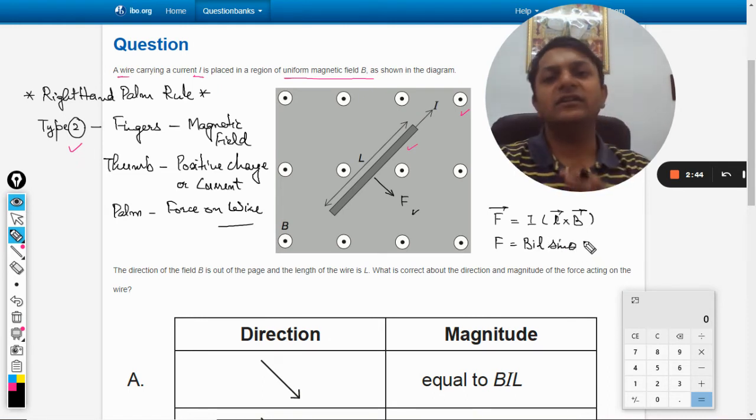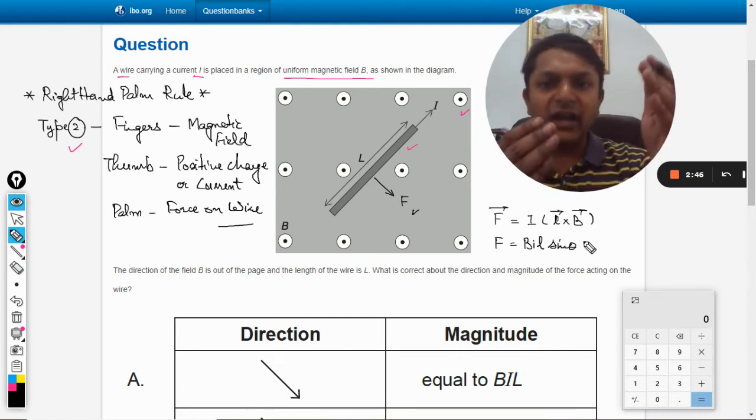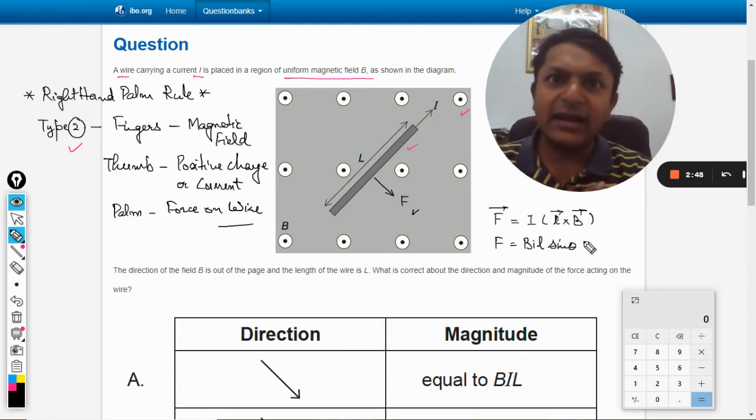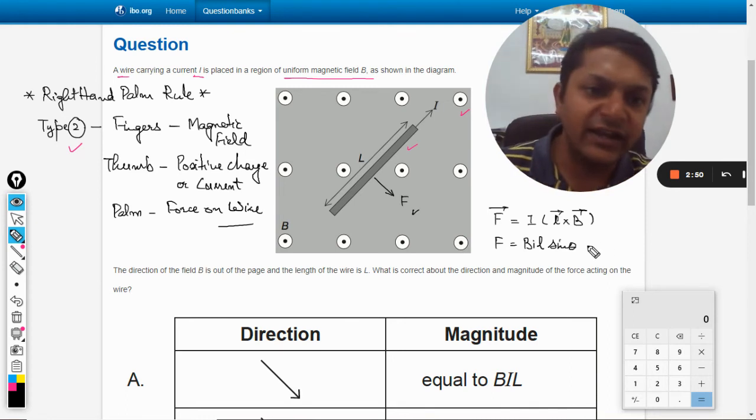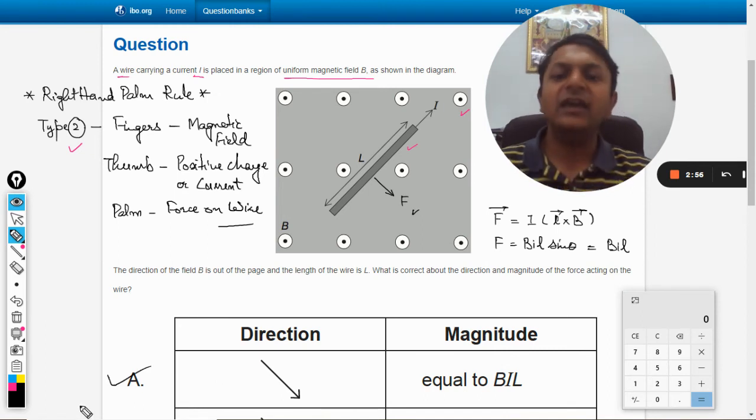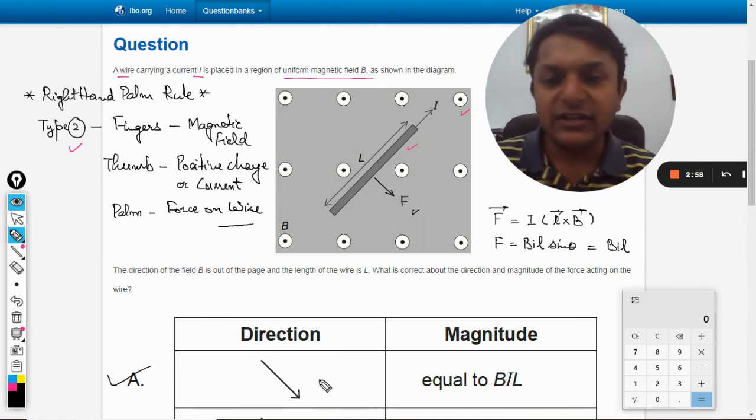Because theta here is 90 degrees, the angle between the wire and the magnetic field is 90 degrees. Sin 90 is 1, so it will be equal to BiL. So option A is absolutely correct - the direction shown is correct and it is equal to BiL.